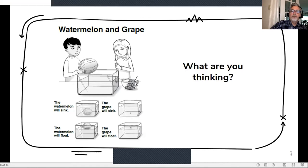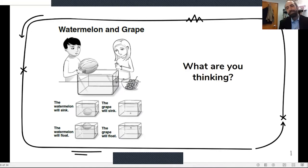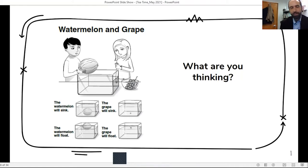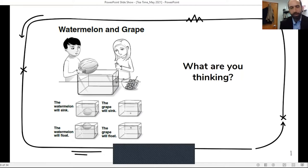Caitlin says the watermelon will sink and the grape will float. Thanks, Caitlin. Both float, Bev says. The watermelon will sink, the grape will float, Tracy. We got Anna, watermelon and grape will both float. Awesome. So we got a lot of ideas out there. So it's a great opportunity to investigate it. And this is one that it's just very easy to explore firsthand.